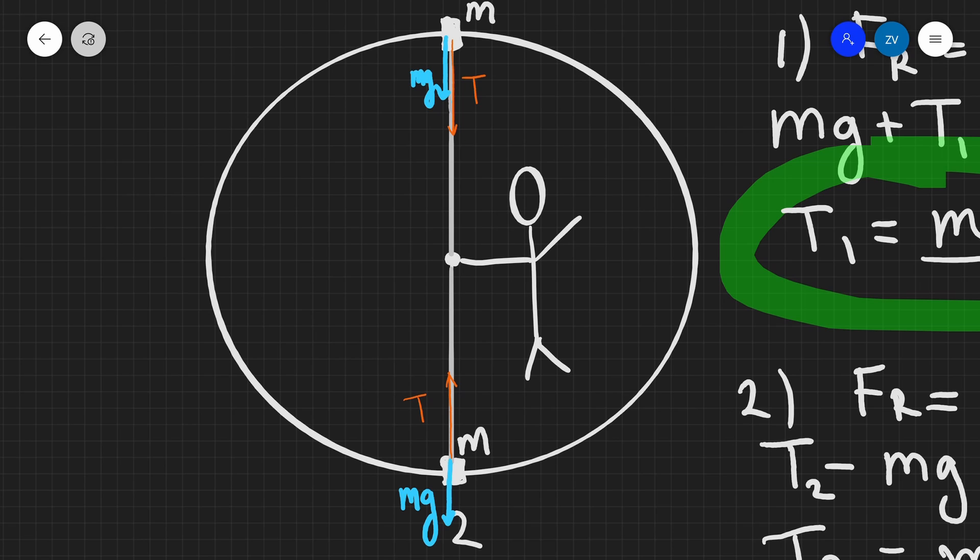One final question you might ask is, what happens in a different position? Let's say that this position here is position three and we have the same mass and we have the piece of string acting more or less horizontally. Well, in this case, the force of the weight will be acting straight down at 90 degrees, so this is going to be mg.